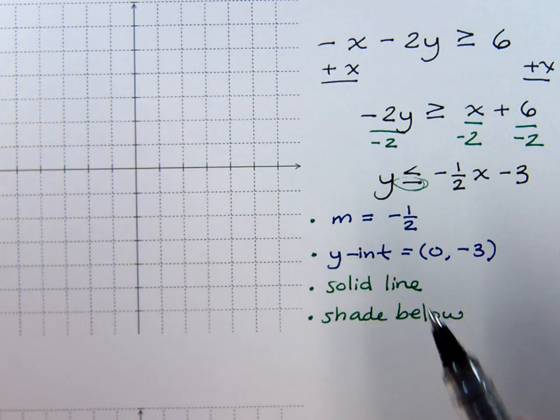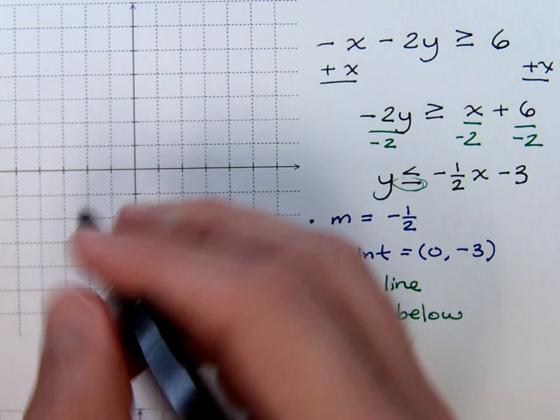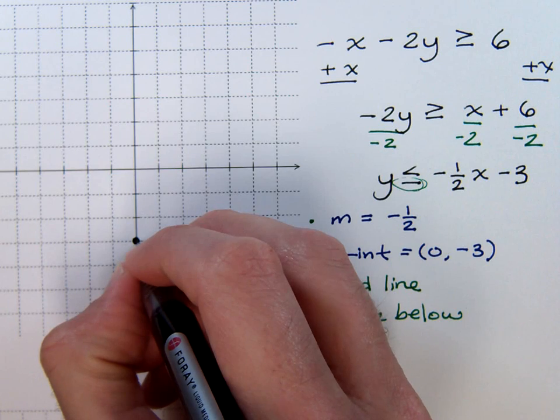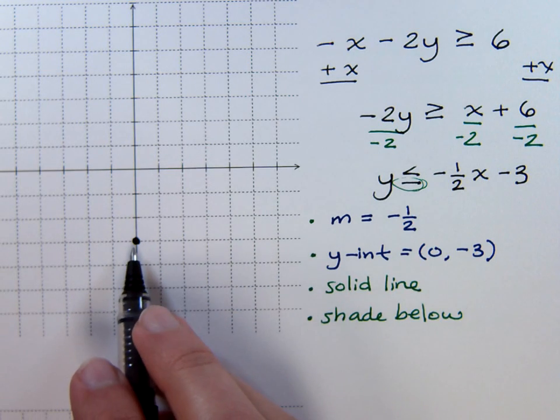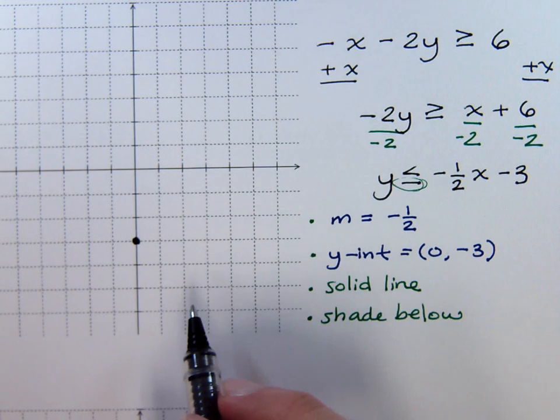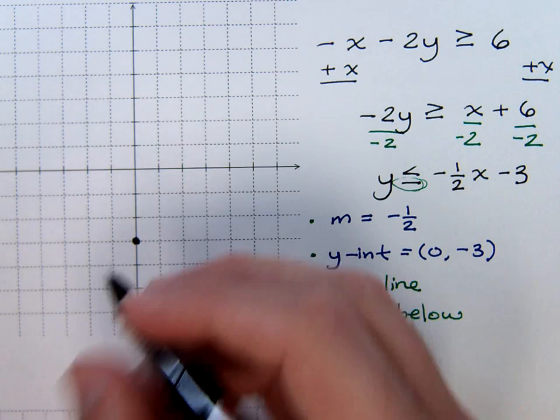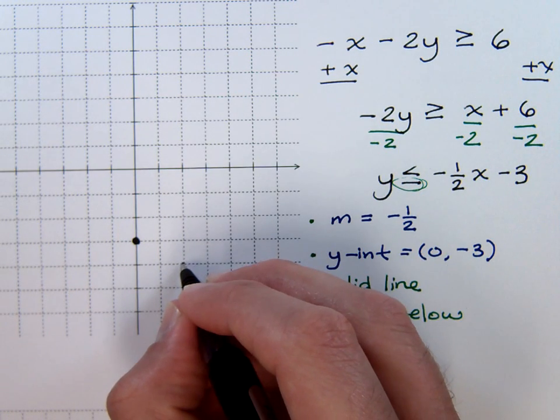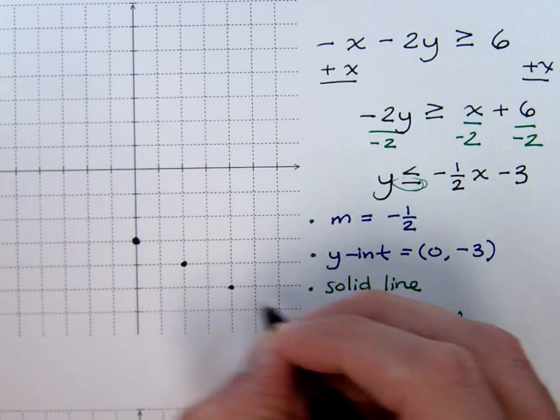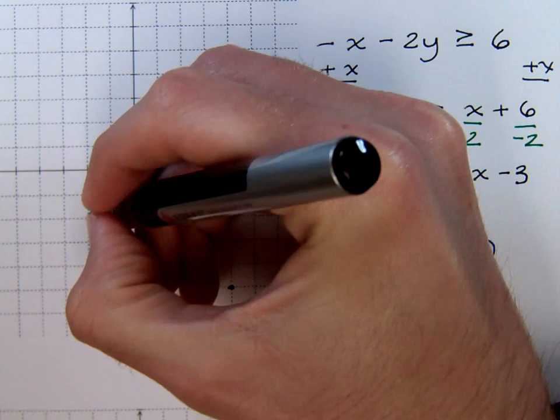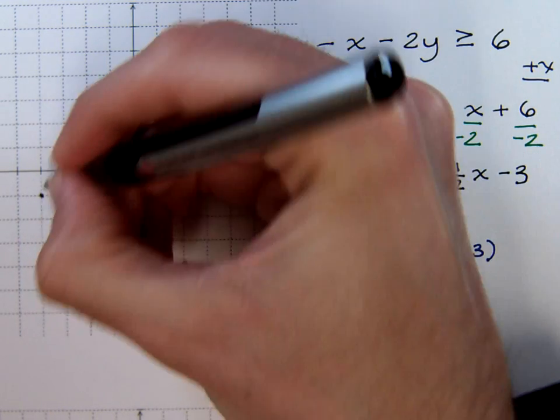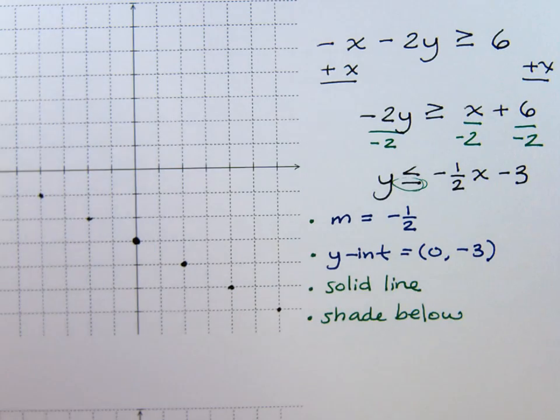So let's start here. The y-intercept is 0, negative 3, so here's 0, negative 3. I'm using a filled in circle because I get that equal to option here, which is very nice. My slope is negative one-half, so down one to the right two. Put all these nice points here. The more points we have, the more accurate we can be.